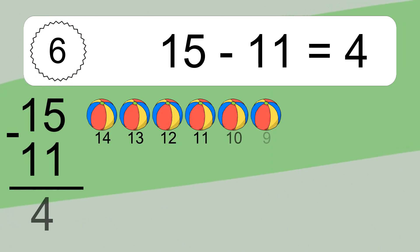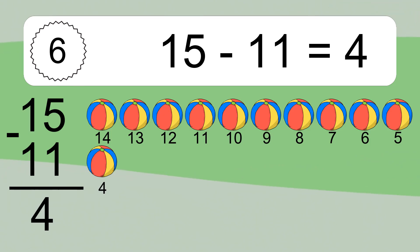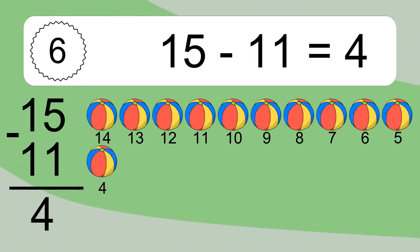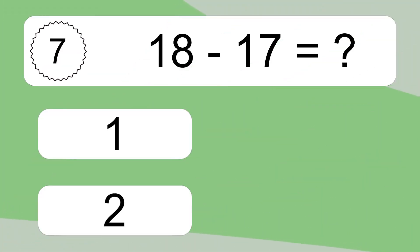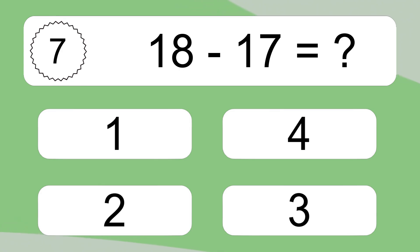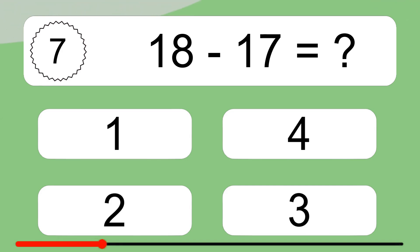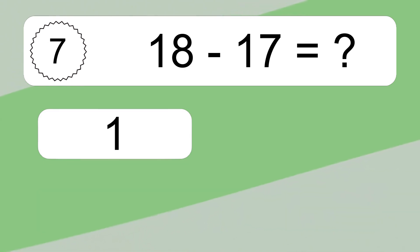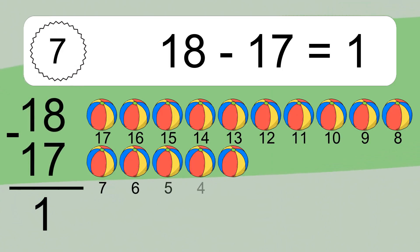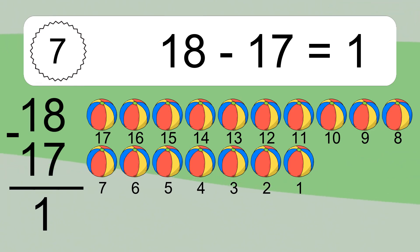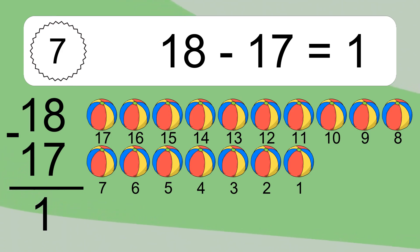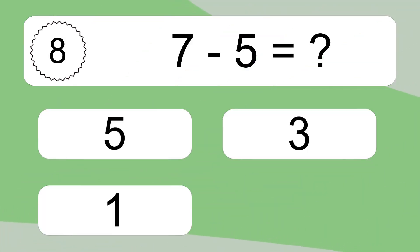15 minus 11 equals 4. Let's count it: 14, 13, 12, 11, 10, 9, 8, 7, 6, 5, 4. 18 minus 17 equals what? 18 minus 17 equals 1. Let's count it: 17, 16, 15, 14, 13, 12, 11, 10, 9, 8, 7, 6, 5, 4, 3, 2, 1.